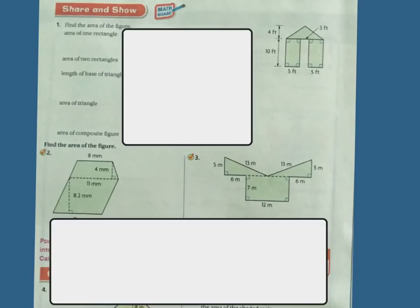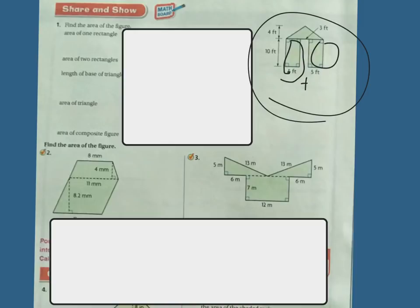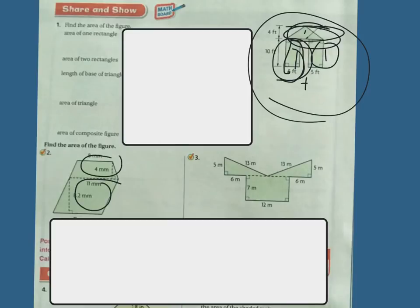To do this, you need to find the area of this rectangle — and there are two of them, so add those together — then find the area of this triangle and add that together. For the next one, find the area for each of the three shapes and add them. The rest you're going to do on your own or with a partner, and I'm always there for you as well. Good luck!